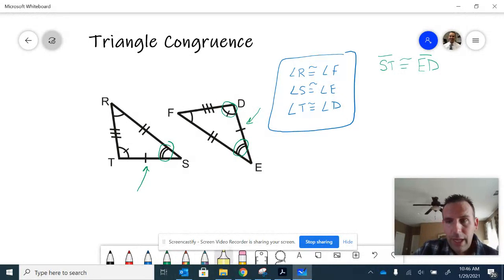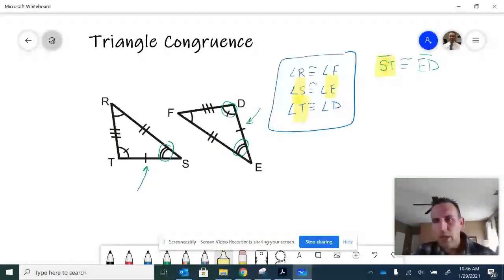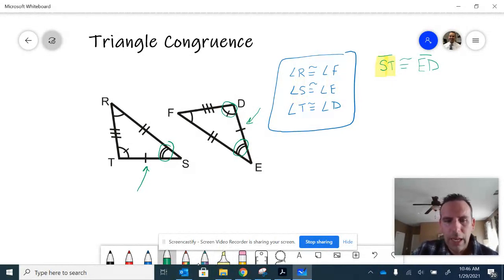Another way to notice that, by the way, is that if I go S and then T in that order, look at how that would correspond to the angles at the left. S-T, and then it would go E-D, same order. So you can use that to quickly establish these statements.